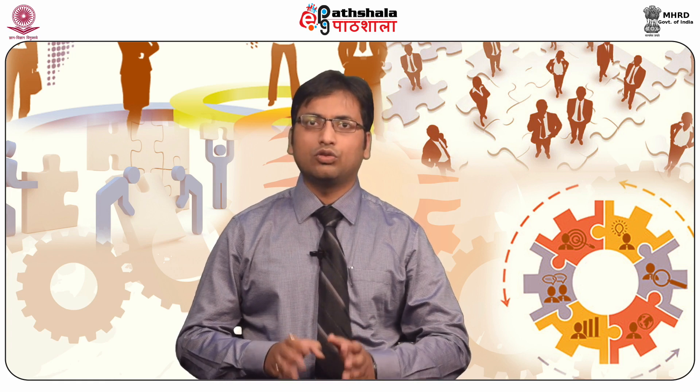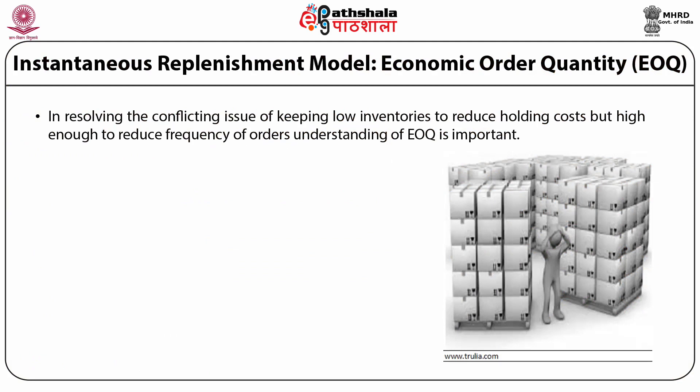A retailer who stores a variety of products has to constantly be cautious of customer demand for different kinds of products. Storage of one type of product requires space and maintenance. If demand is low, it results in wasteful expenditure, whereas the retailer would lose customers for items that are in demand. Understanding different inventory models would help a retailer reduce inventory cost and fulfill customer demand. The issue of keeping low inventories to reduce holding cost but high enough to reduce frequency of orders makes understanding of EOQ important.